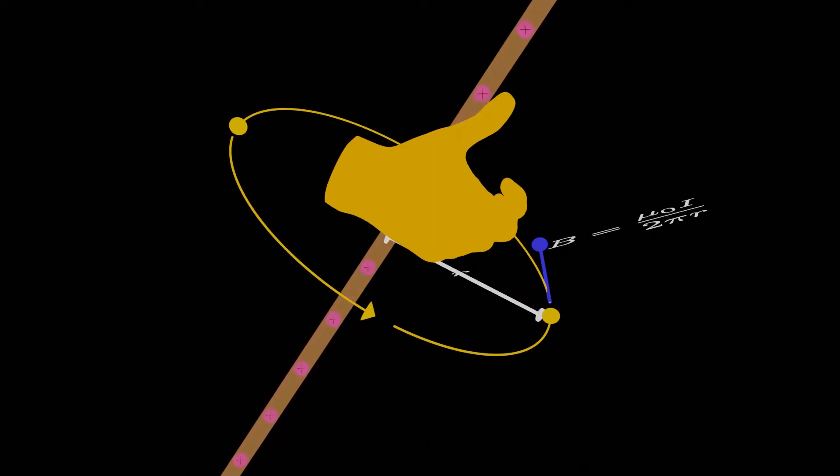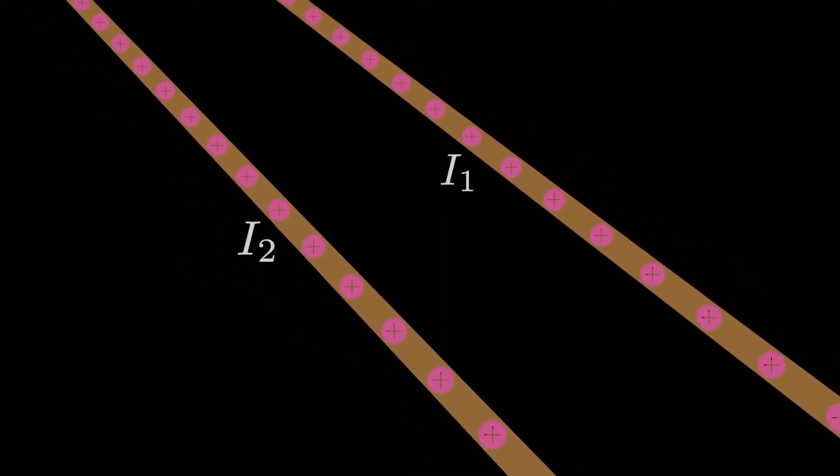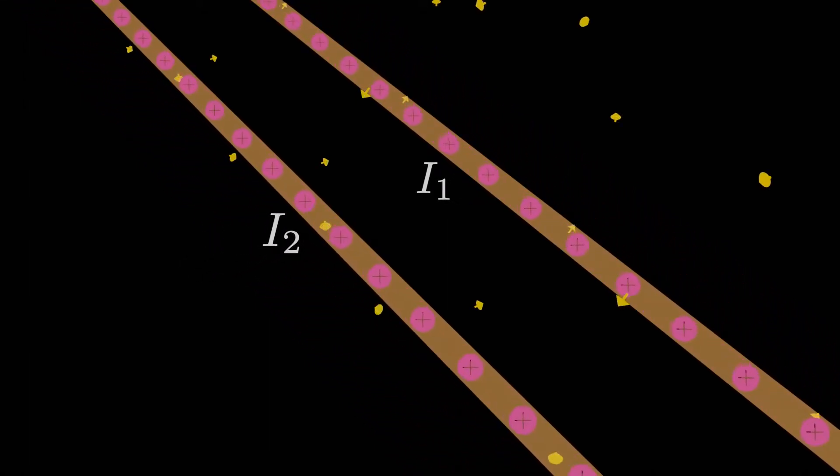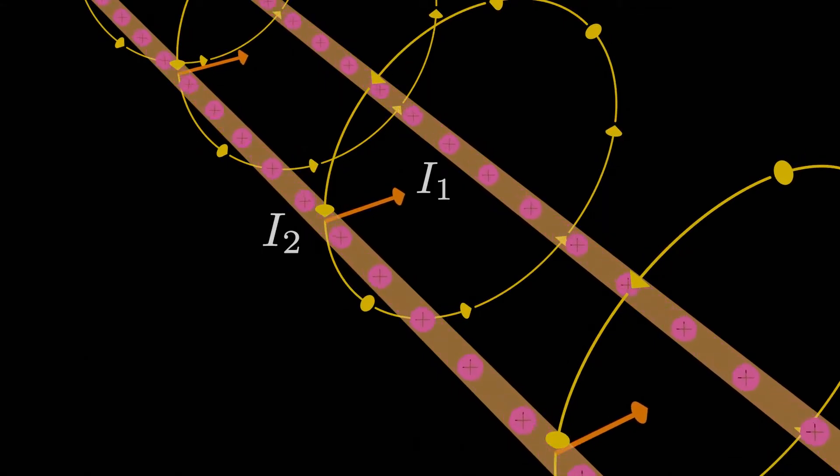So something interesting we can do is, imagine we have two long straight wires parallel to each other, carrying currents with different magnitudes, but in the same direction, say I1 and I2. Each one produces a magnetic field in space, and each one feels a force due to the magnetic field that the other produces.